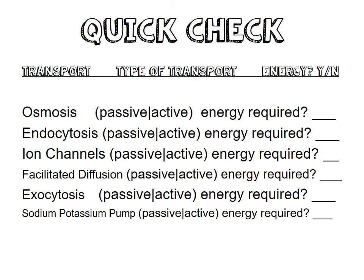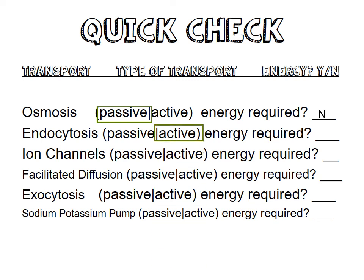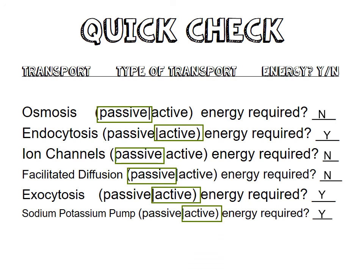Let's do a quick check of what we've learned. Osmosis is passive and does not require energy. Endocytosis is active and does require energy. Ion channels are passive and do not require energy. Facilitated diffusion is also passive and does not require energy. Exocytosis is active and does require energy. The sodium-potassium pump is active and does require energy. And that's all you need to know about cell transport.